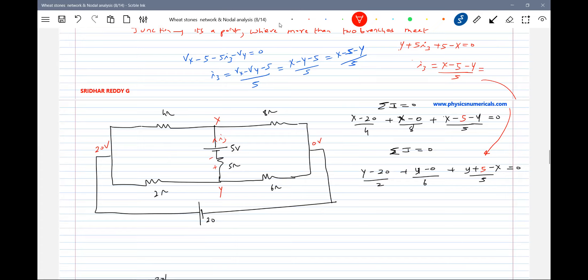Now this will become minus 5*I3 plus 5. Now solve this. This will become I3 is equal to Y minus X plus 5 divided by 5. Now justified.